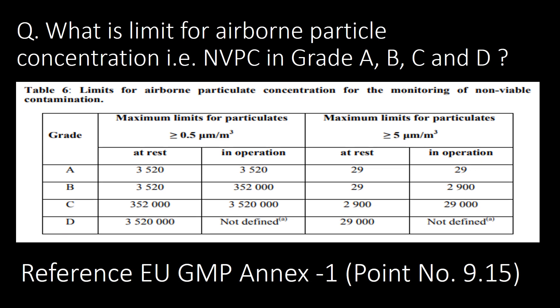What is the limit for airborne particle concentration, i.e. NVPC, in Grade A, B, C, and D? You can refer to EU GMP Annex 1.9.15 for airborne particle concentration limits in Grade A, B, C, and D.